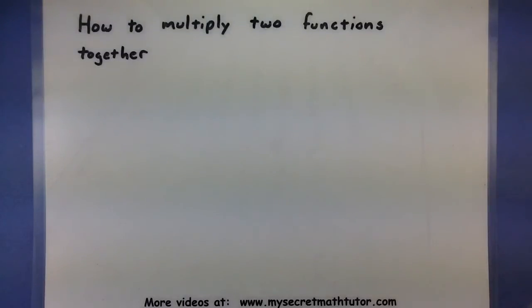In this video, we want to multiply two functions together. Now, the key for doing this is to make sure that every term in one function gets multiplied by every single term in the other function.